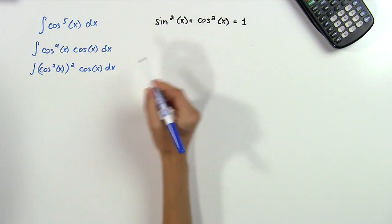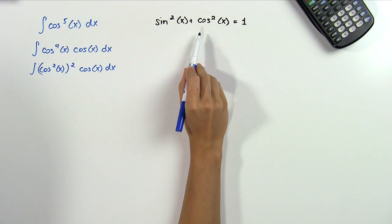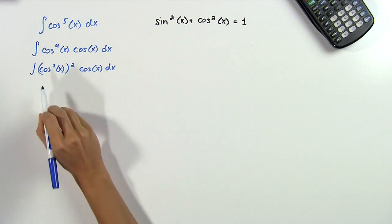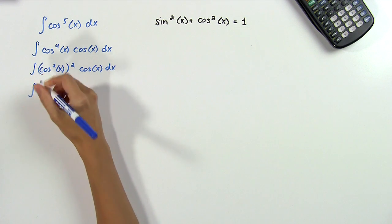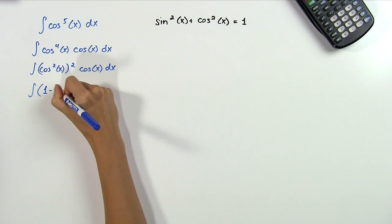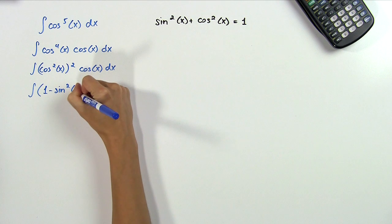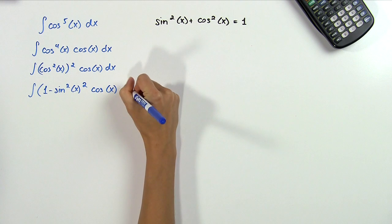Now we have this in a form where we can use this identity. If we solve for cosine squared x here, we will get 1 minus sine squared x. So that's what we substitute instead of cosine squared x in our equation. And we get the integral of 1 minus sine squared x all squared times cosine x dx.